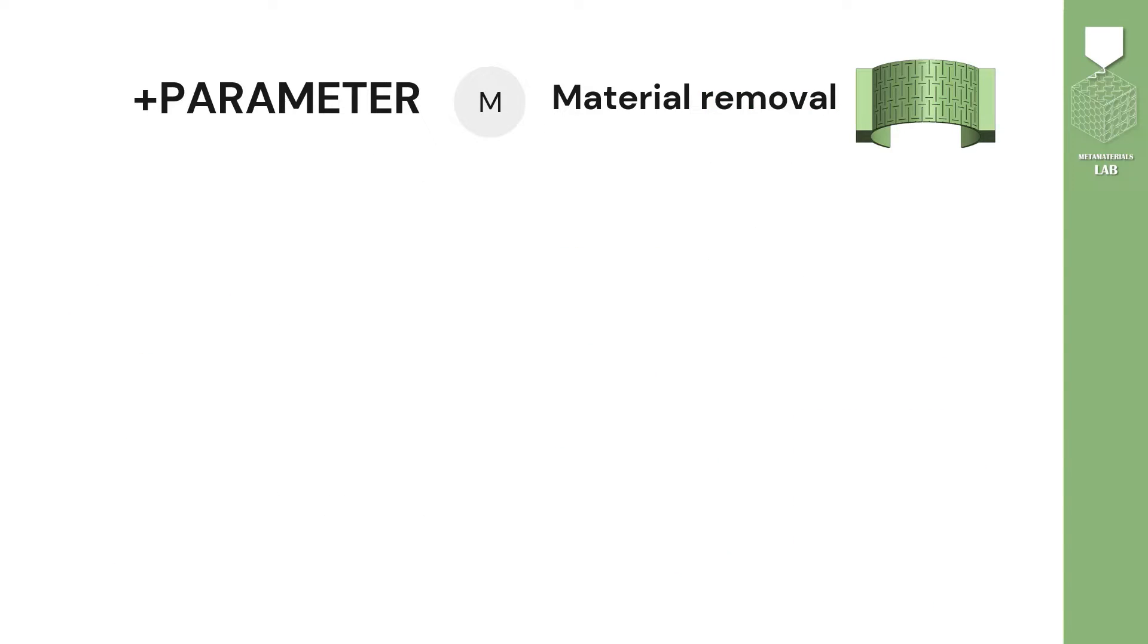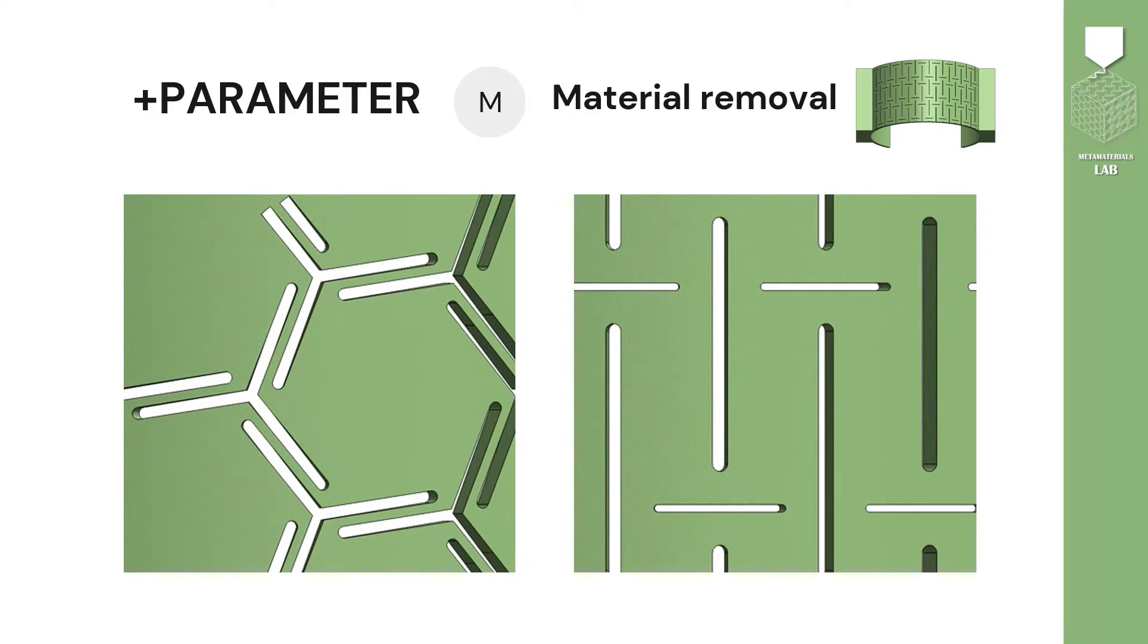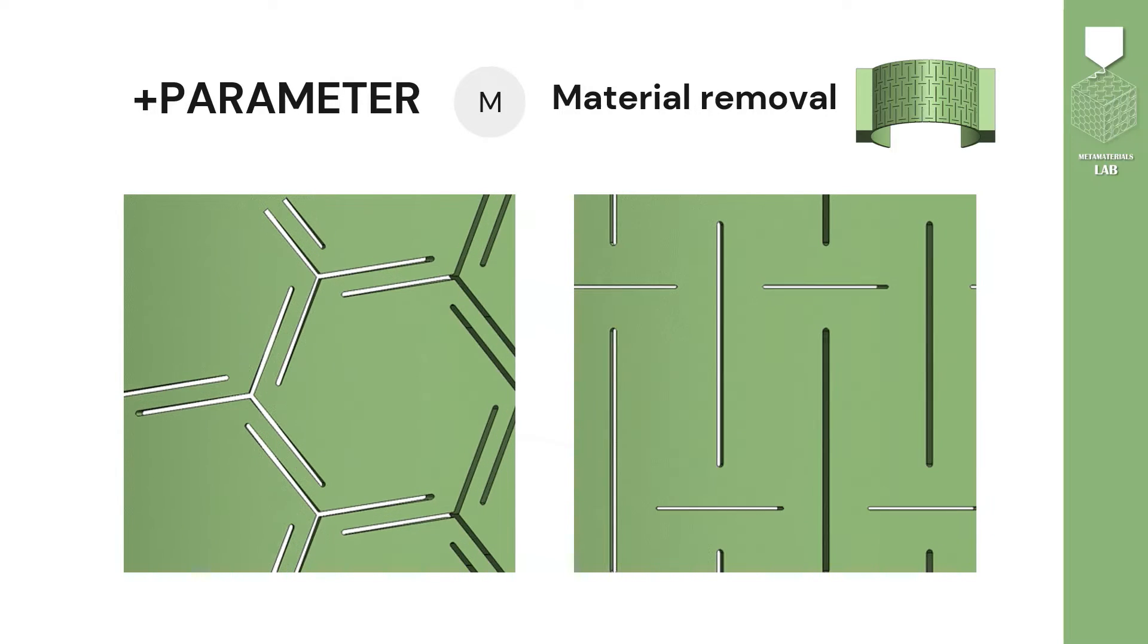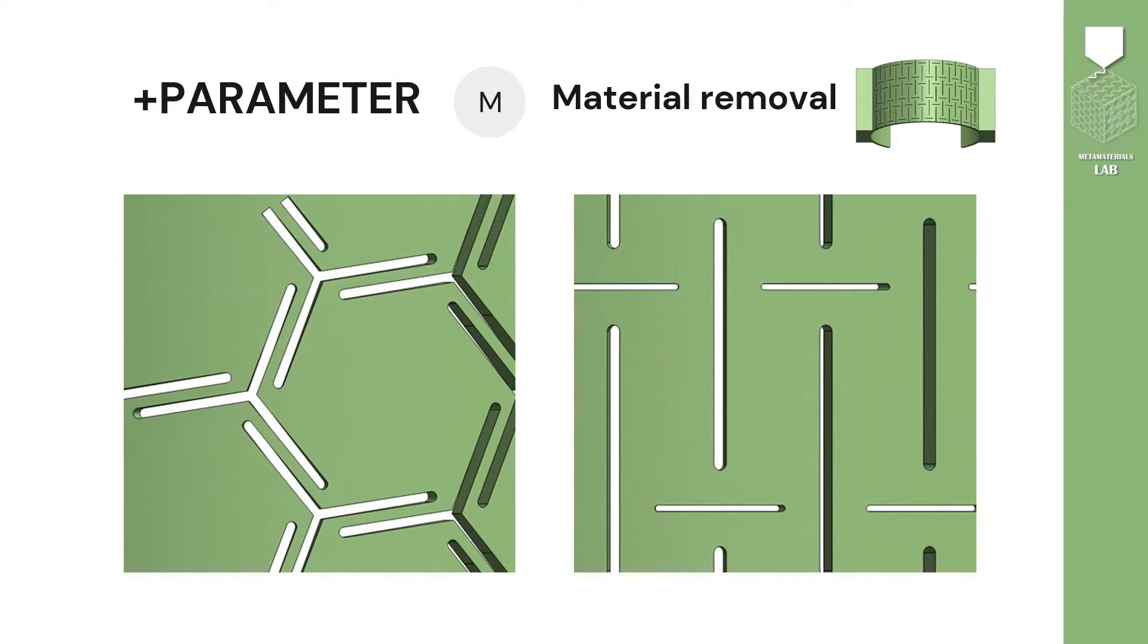The last parameter is the percentage of removed material. It depends on the thickness of the cuts, as you can see on the following gifs. Same amount of material was removed from both metacompliant joints.